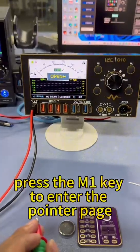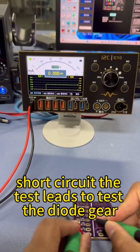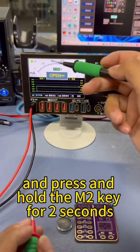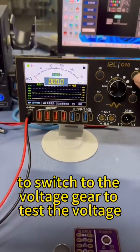Press the M1 key to enter the pointer page. Short circuit the test leads to test the diode gear, and press and hold the M2 key for two seconds to switch to the voltage gear to test the voltage.